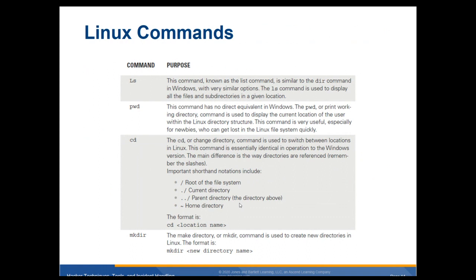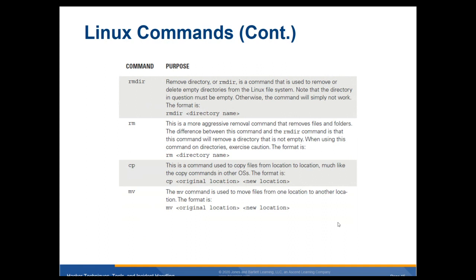mkdir is make directory. rmdir removes a directory — if there's anything in it, you'll get an error, but you can use a dash flag like force. rm is the most aggressive removal command; it removes files and folders, and unlike rmdir, it will remove a directory that's not empty. cp is for copying files — you specify the original location then a space and the new location. mv is used to move files from one location to another and can also rename files.